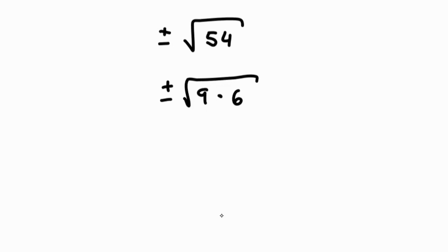As we can see, 9 is a perfect square of 3. So this will be 9 times 6, which gives us plus or minus 3 root 6. This is a mixed radical in the simplest form.